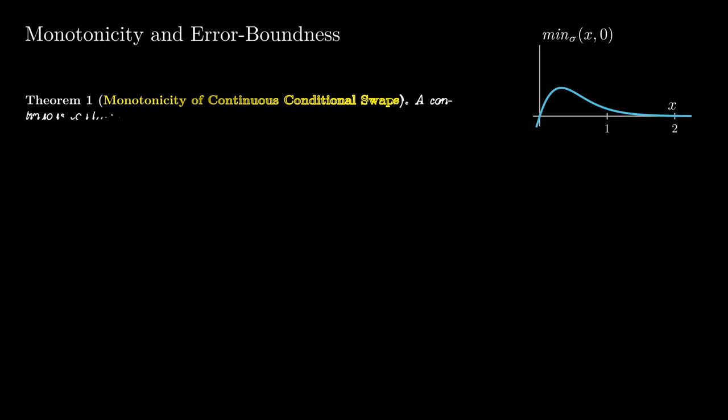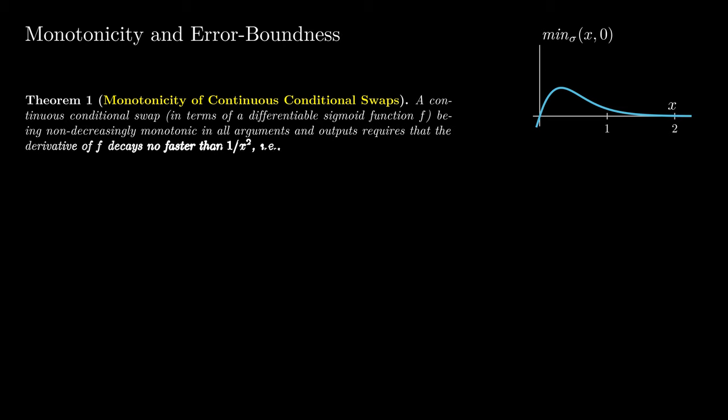As monotonicity is highly desirable in optimization and error-boundness is also very desirable, we will now consider these properties. The conditional swap with the logistic distribution is non-monotonic, which is undesirable. In our paper, we characterize the requirements for a monotonic continuous conditional swap operator and find that it requires that the derivative of the sigmoid function f, that is the PDF of the distribution, lies in omega of 1 over x squared.